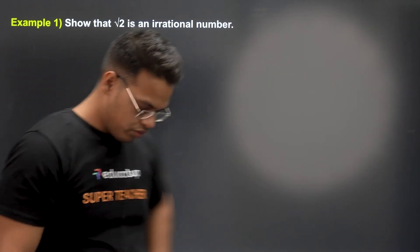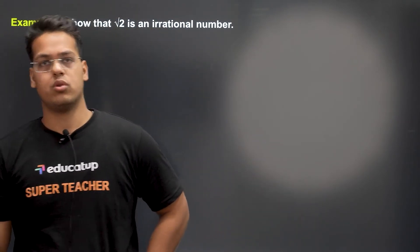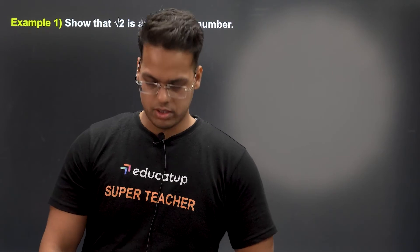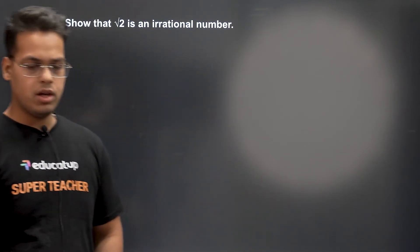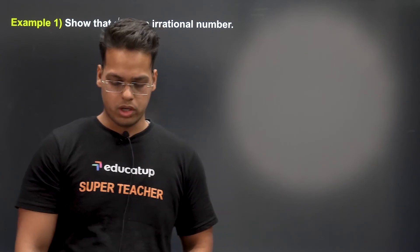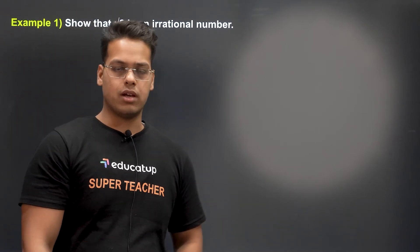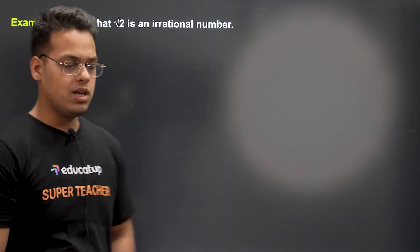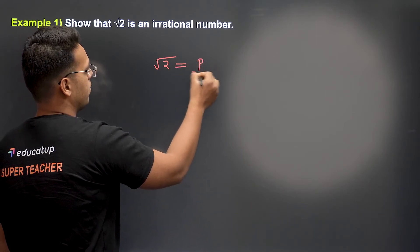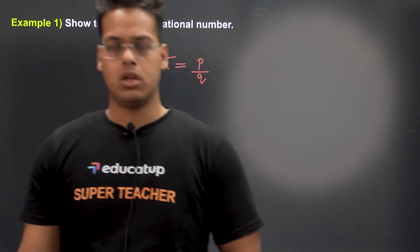Now we have to prove that root 2 is an irrational number. To prove this, we will use the contradiction method. In contradiction, we take the opposite case — so we will assume that root 2 is a rational number. If root 2 is a rational number, then it will be in the form of P upon Q.